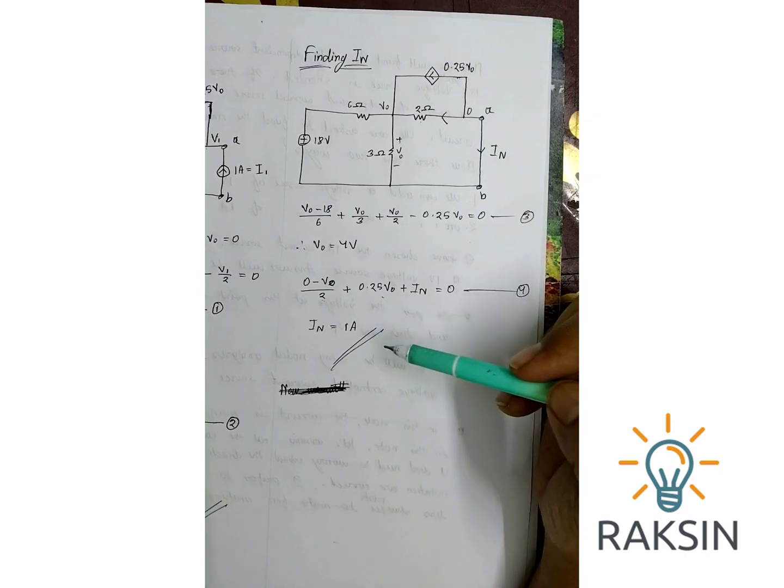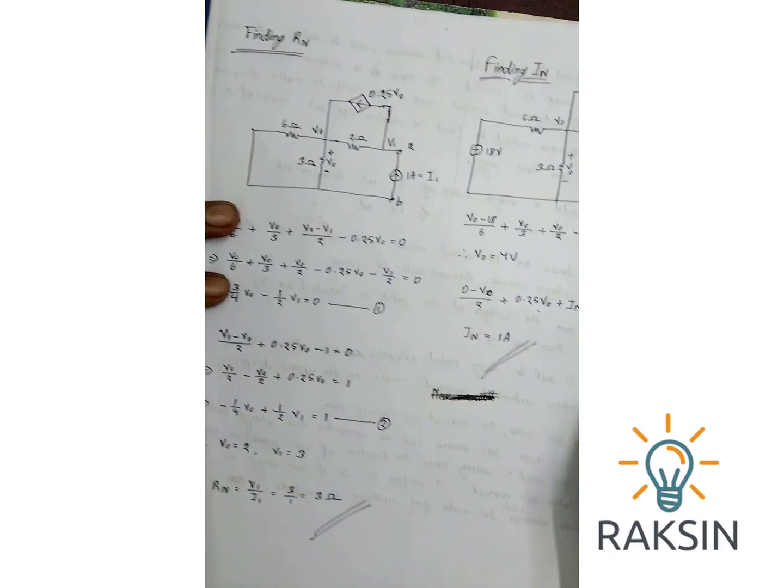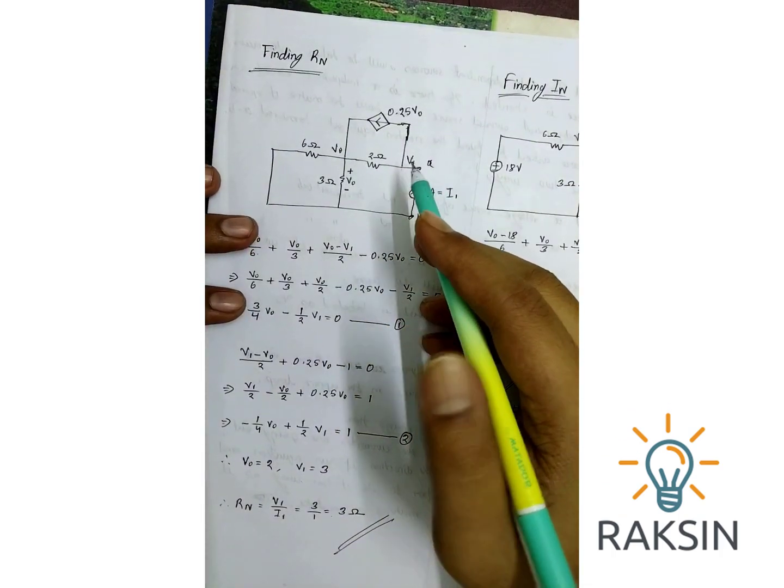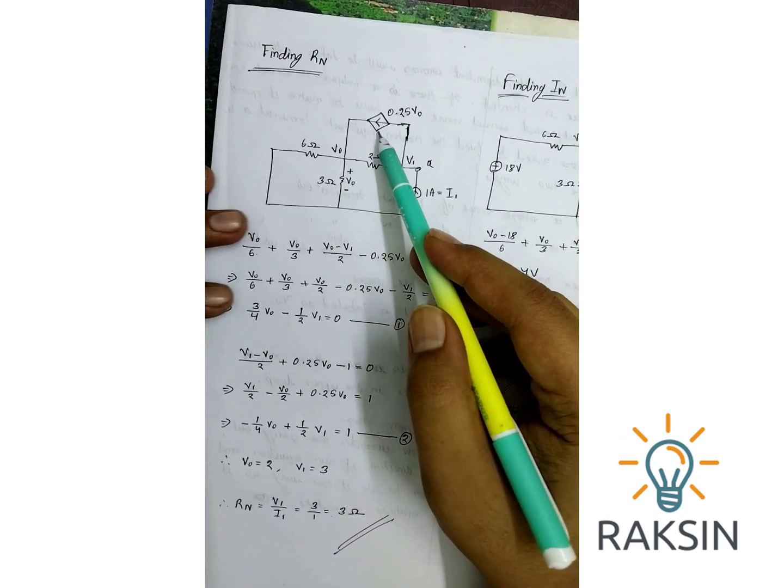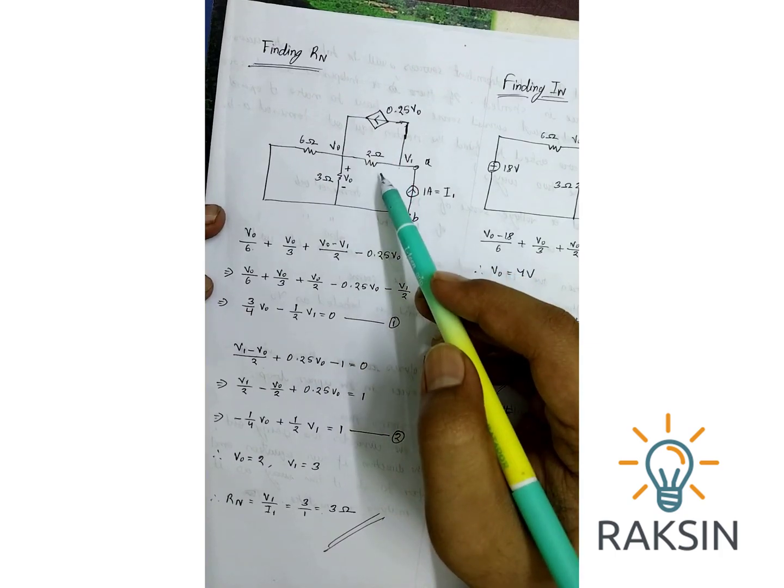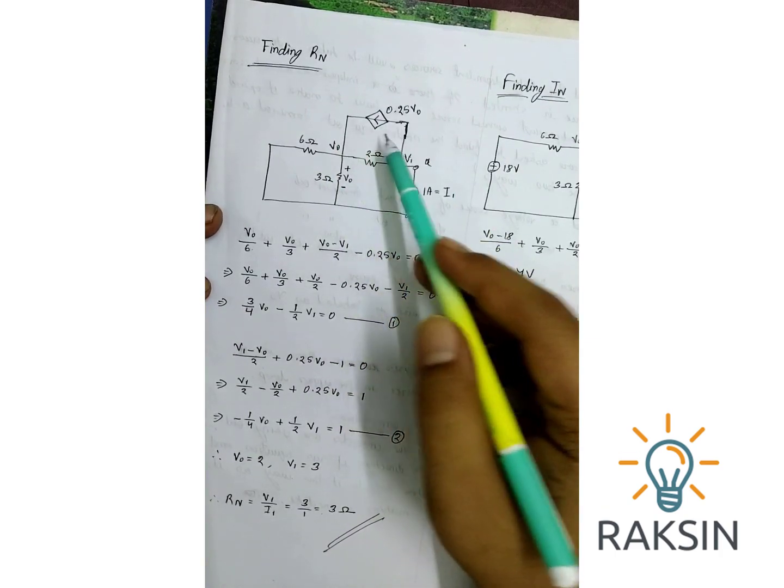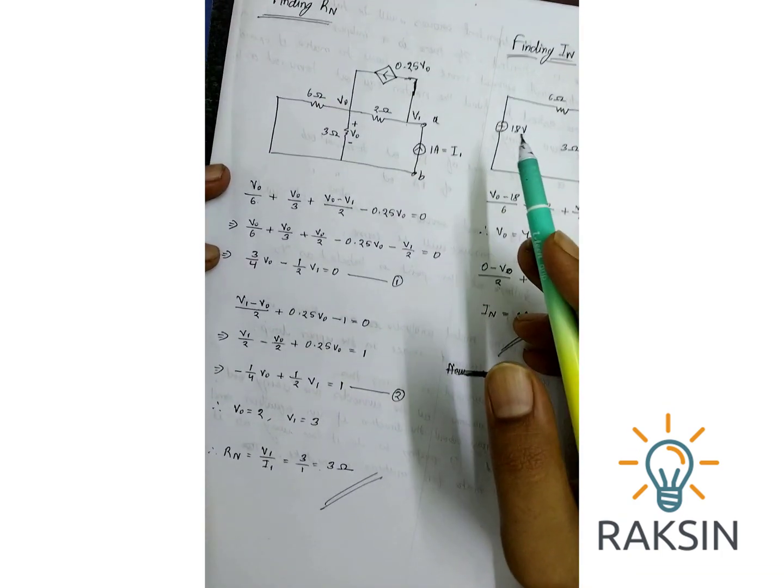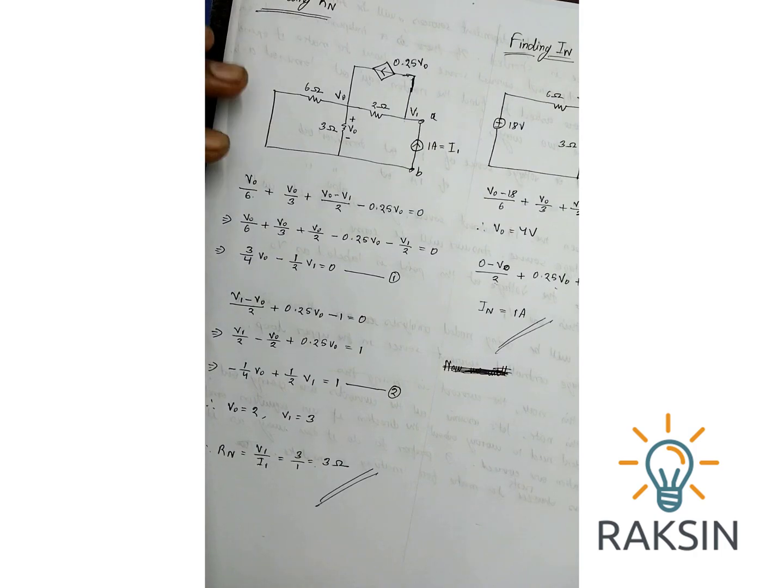There are many ways to solve this problem actually. If we know source transformation, we can perform the source transformation in this place and make it as a dependent voltage source, so the whole loop will be gone and it will be a lot easier. But if you are a beginner, I think that's how we should do it. Thanks for watching.